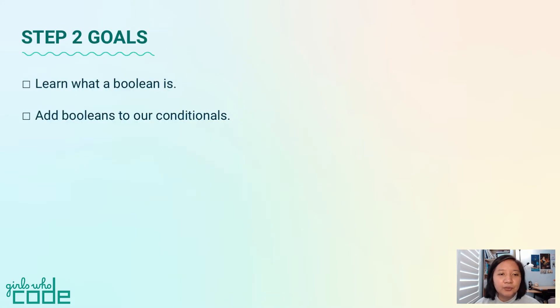In this step, we'll learn what a boolean is and add booleans to our conditionals. By the end of this step, our conditionals will check a statement to determine if it's true or false.